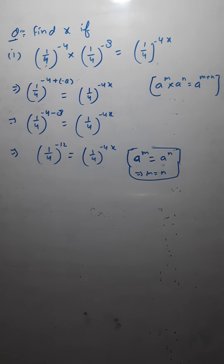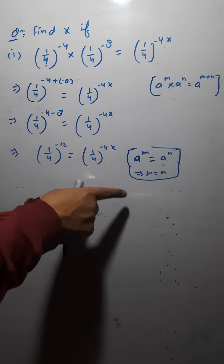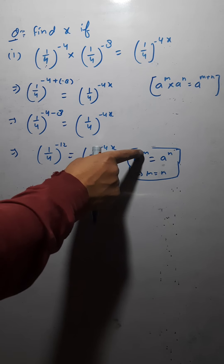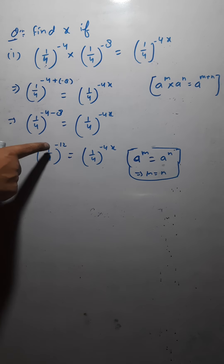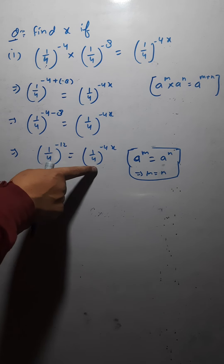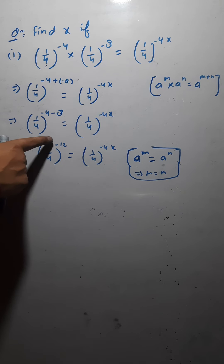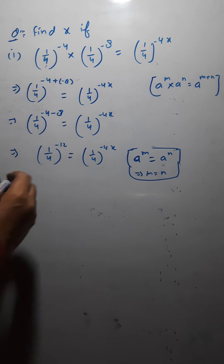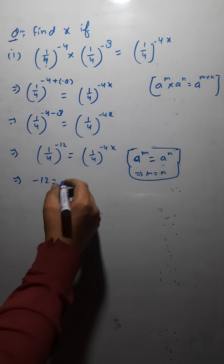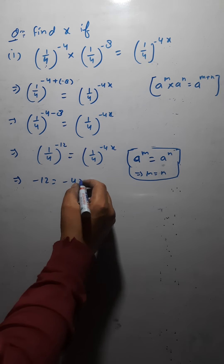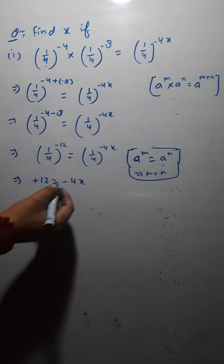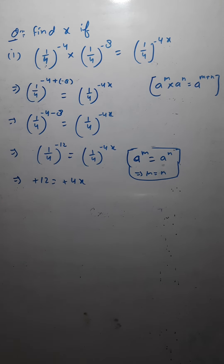So here I can directly equate the exponents: minus 12 equals minus 4x. Both have negative signs — they cancel each other and become positive. We need the value of x from here.